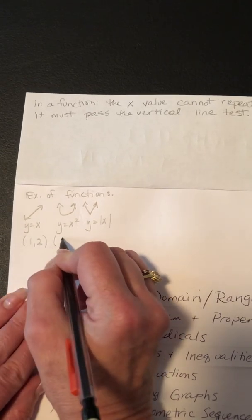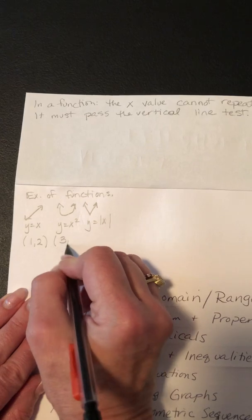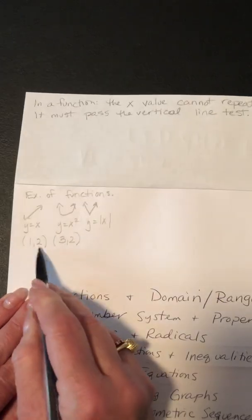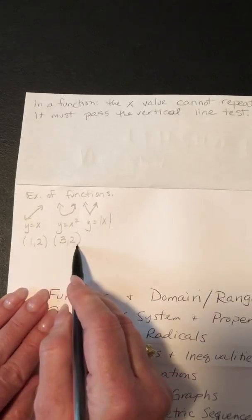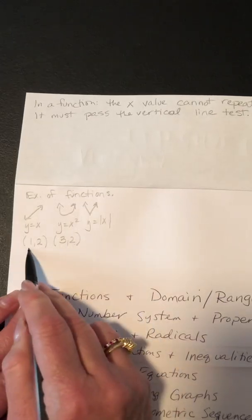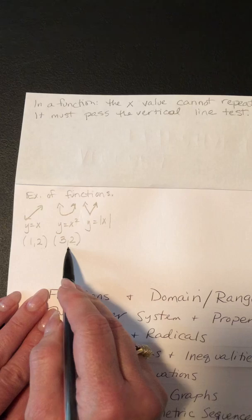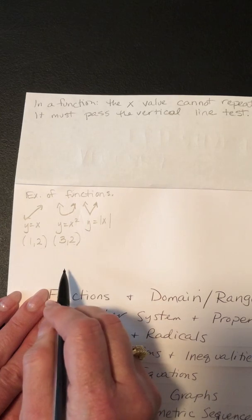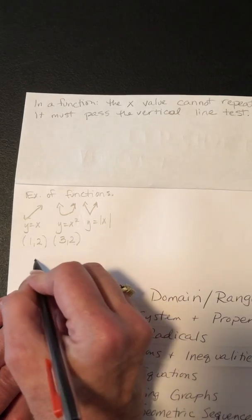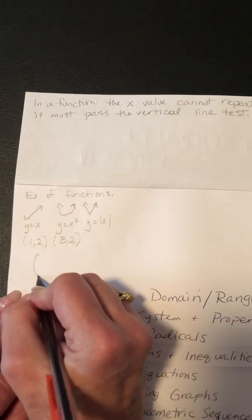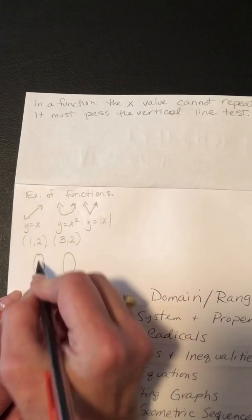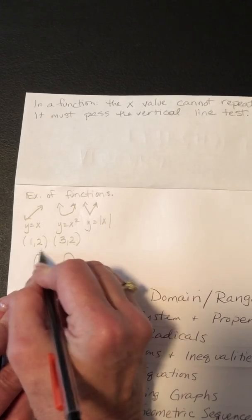Let's do some ordered pairs that are a function. Like (1, 2) is a function and (3, 2) is a function. We don't care what happens with the Y's — it's just that the X's can't repeat.